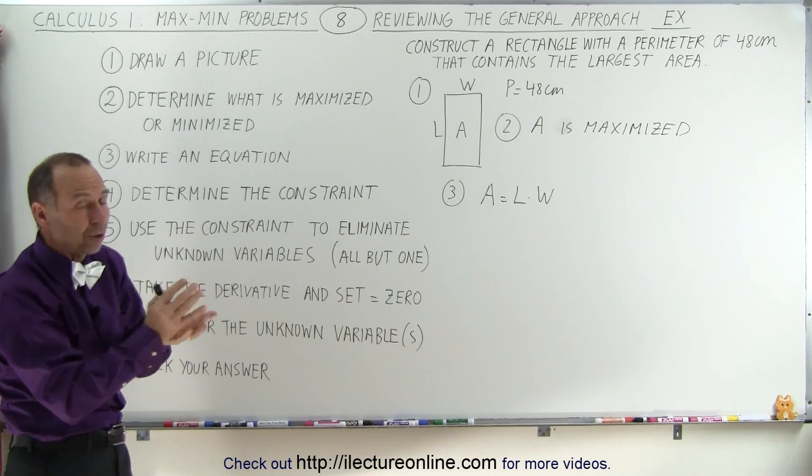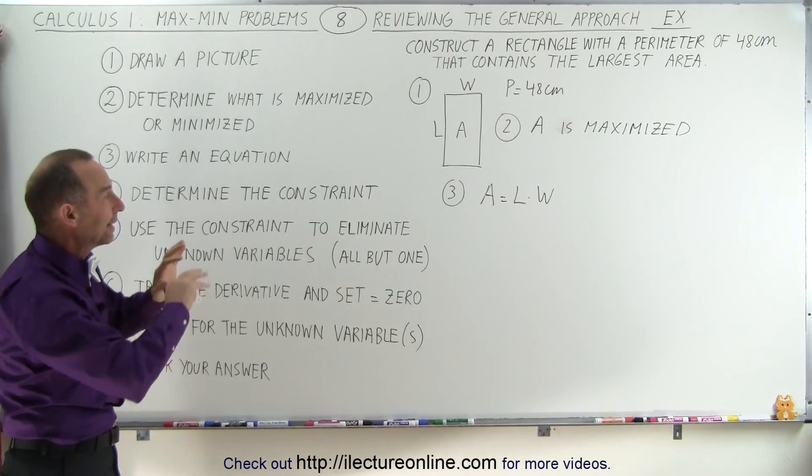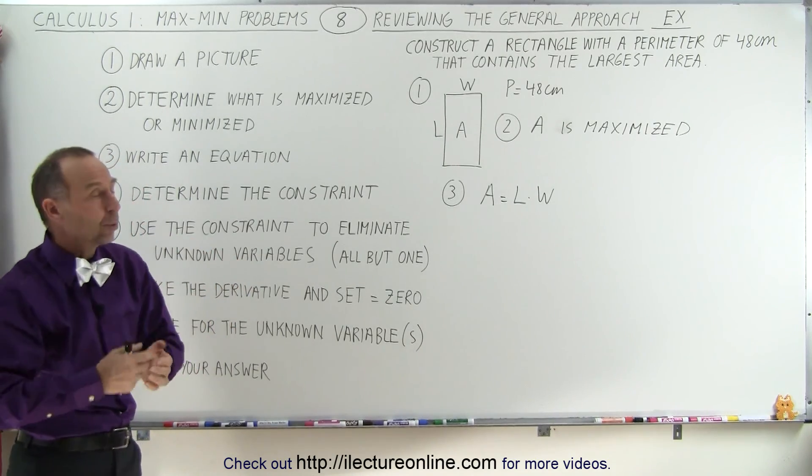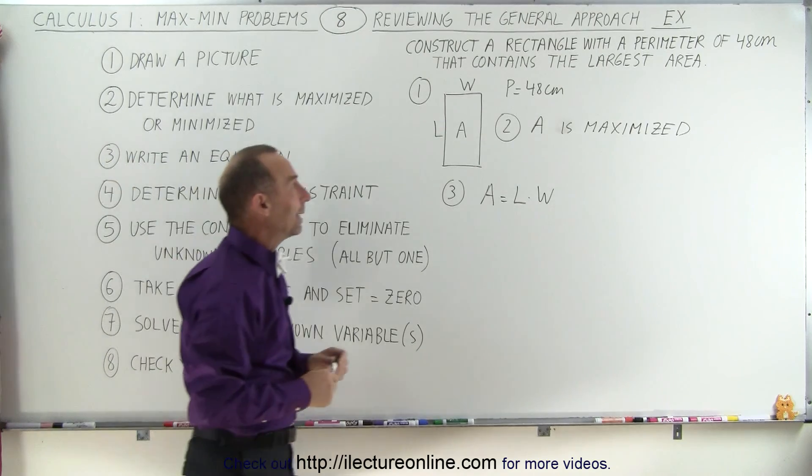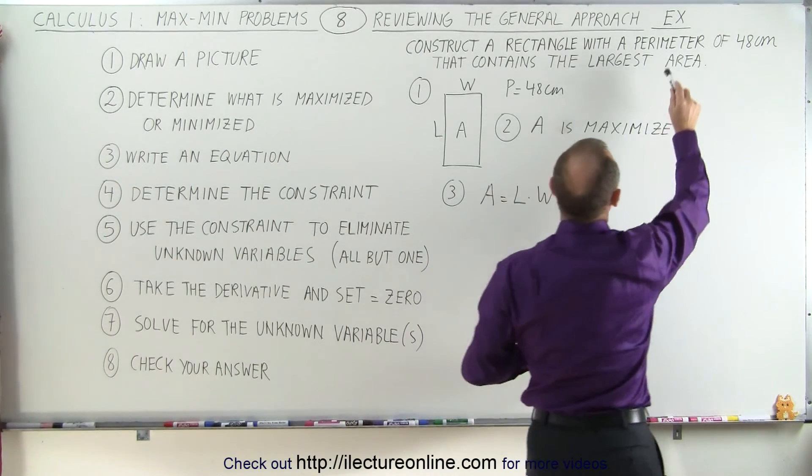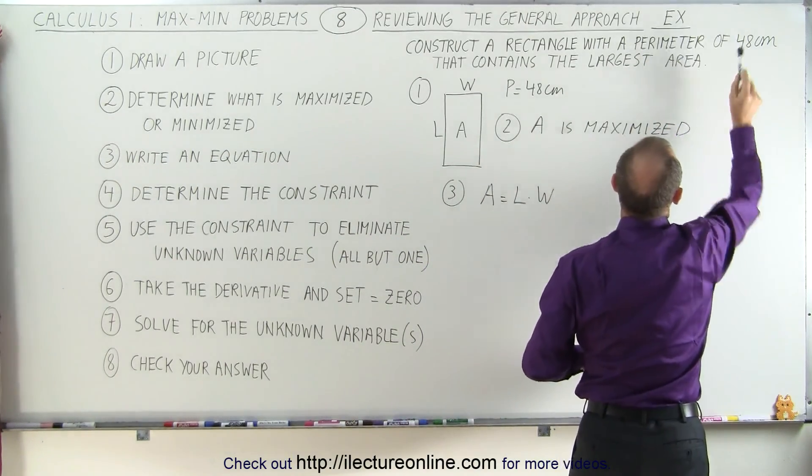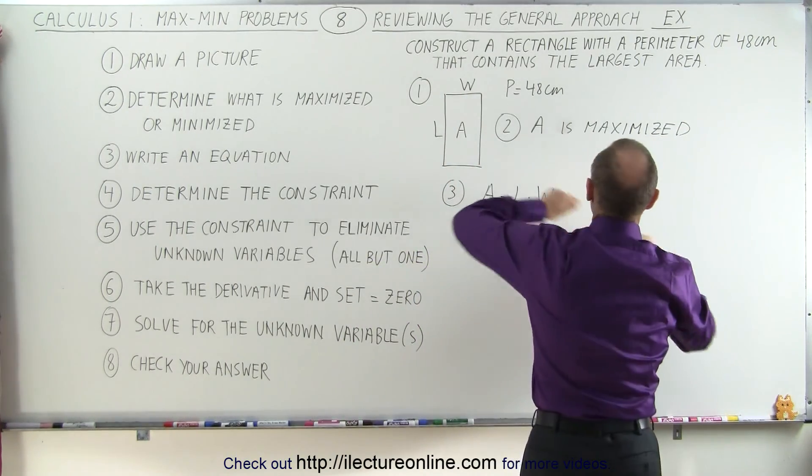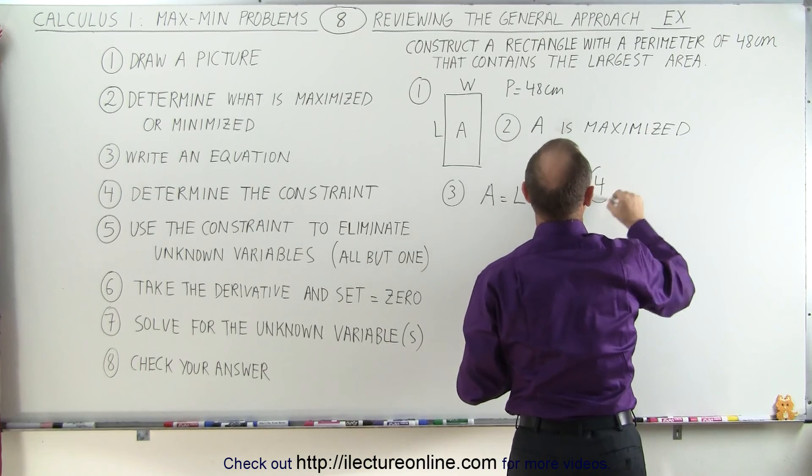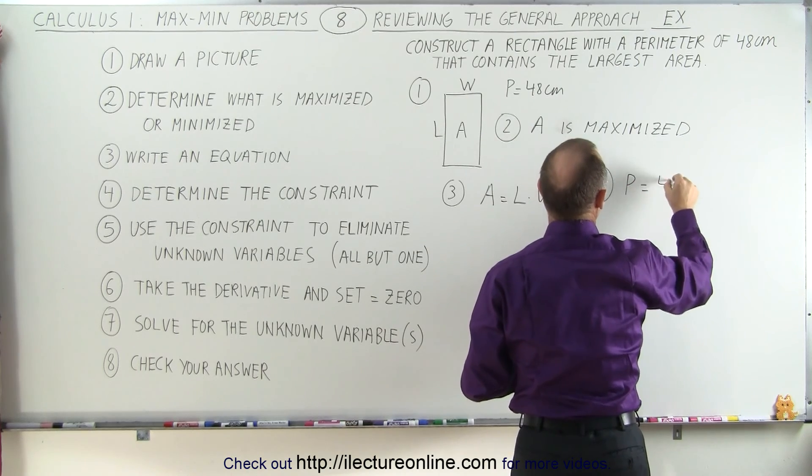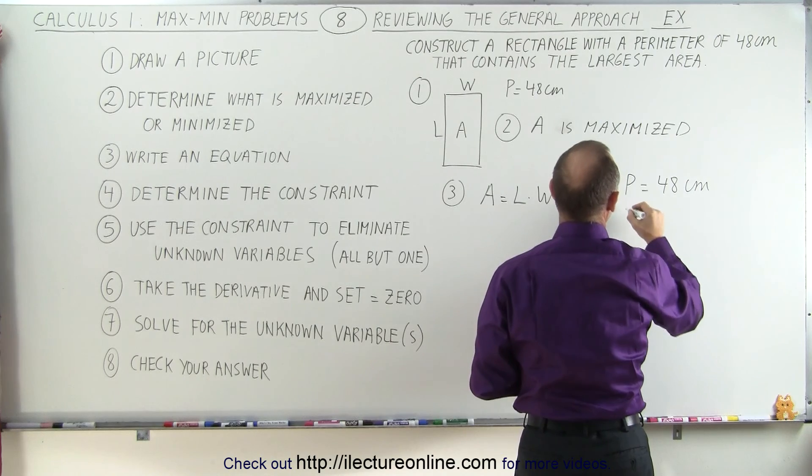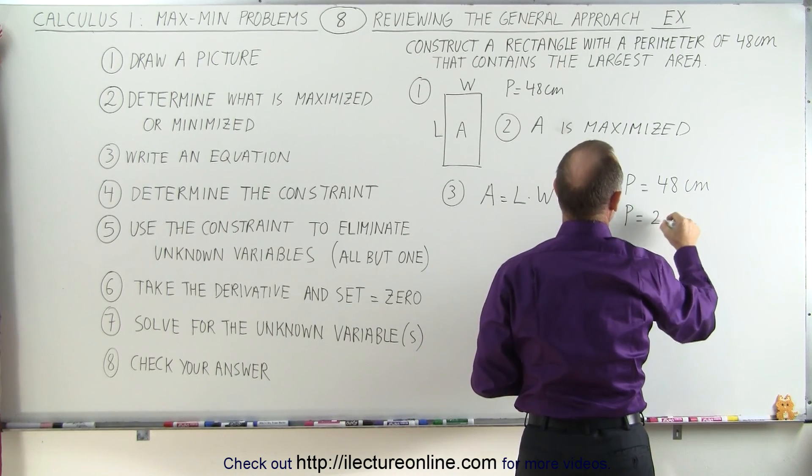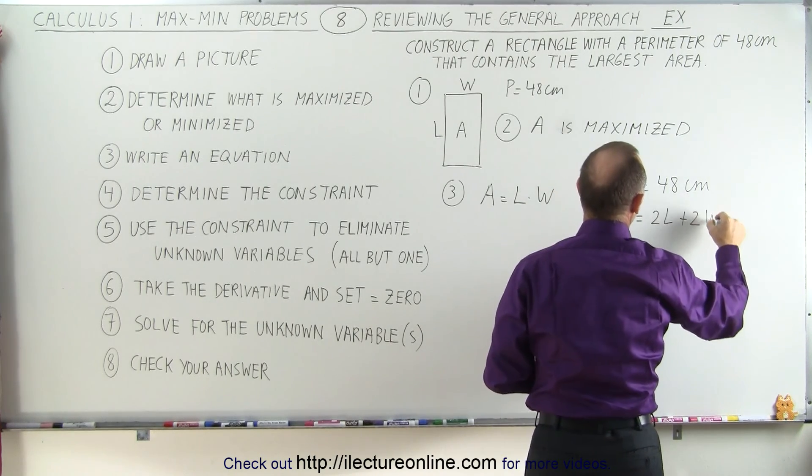The constraint is some limitation, some other piece of information that limits how big the length and the width can be. And here we can see that they tell us that the perimeter is equal to 48 centimeters, so that would be our constraint. The perimeter is equal to 48 centimeters, and of course we know that the perimeter is equal to twice the length plus twice the width.